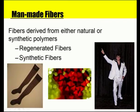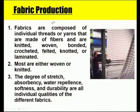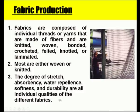Man-made fibers used for making cloth and other materials are derived from either natural or synthetic polymers — either regenerated fibers or synthetic fibers. Fabrics are composed of individual threads or yarns that are made of fibers and are knitted, woven, bonded, crocheted, felted, knotted, or laminated. Key individual qualities of different fabrics include degree of stretch, absorbency, water repellency, softness, and durability.